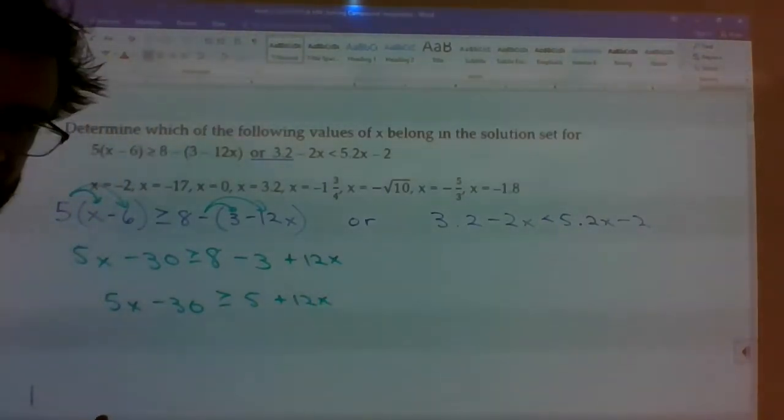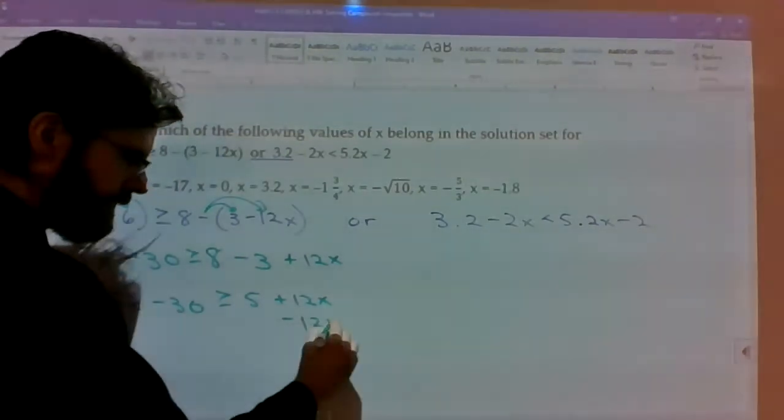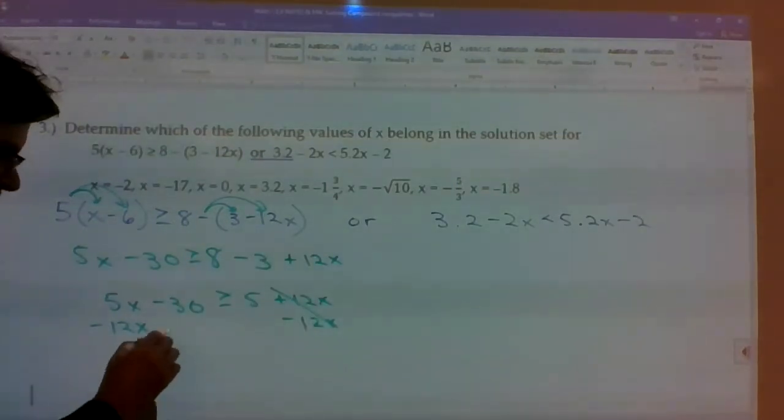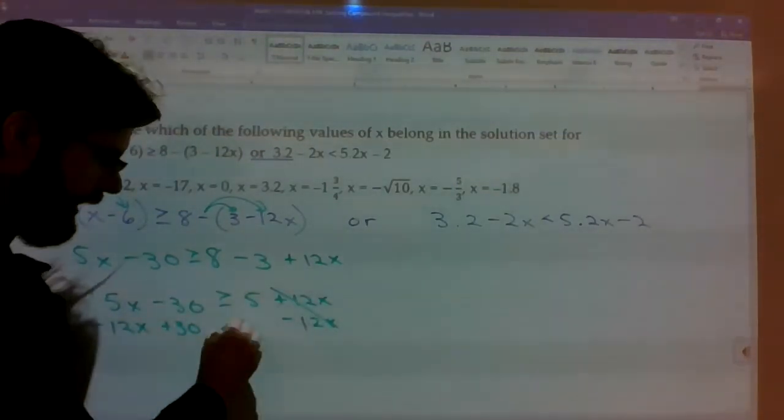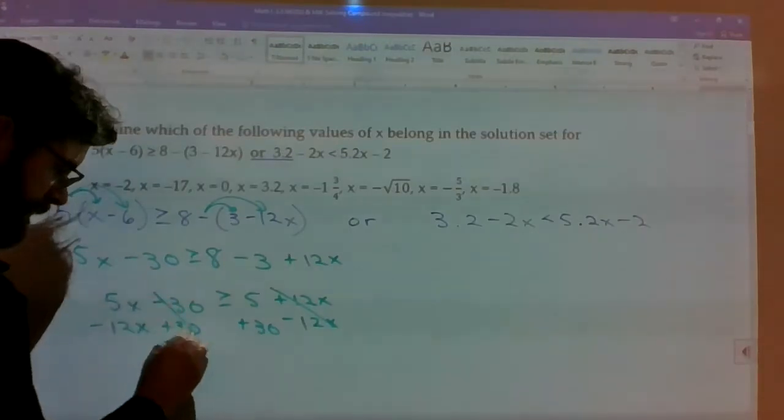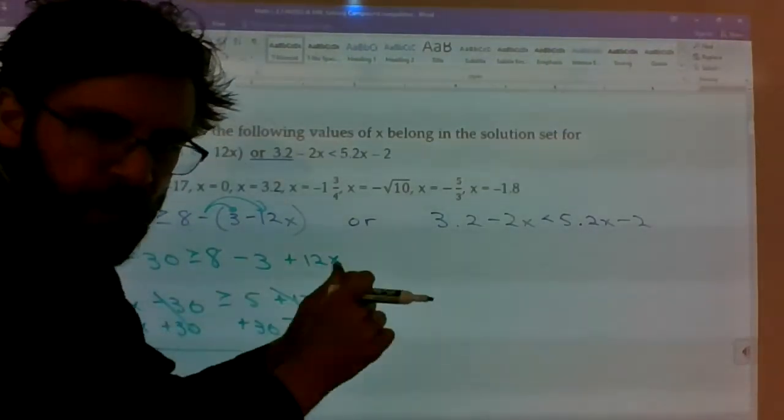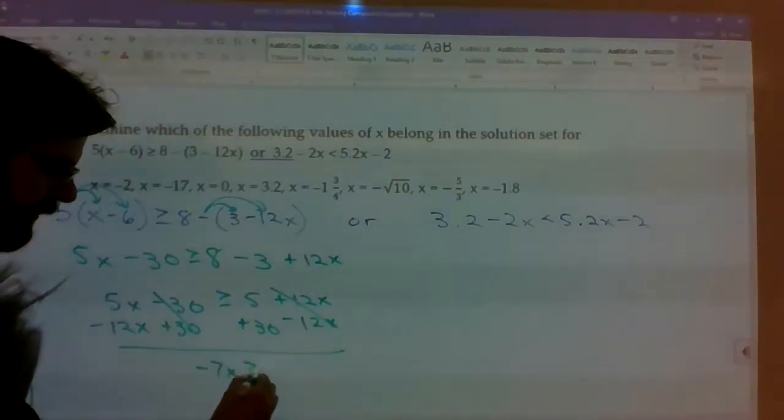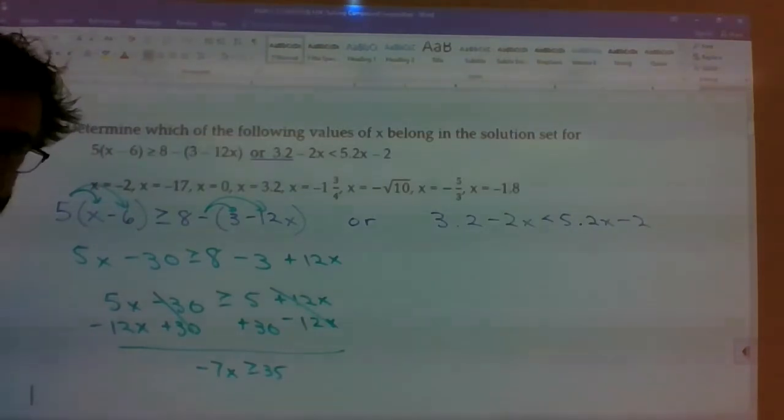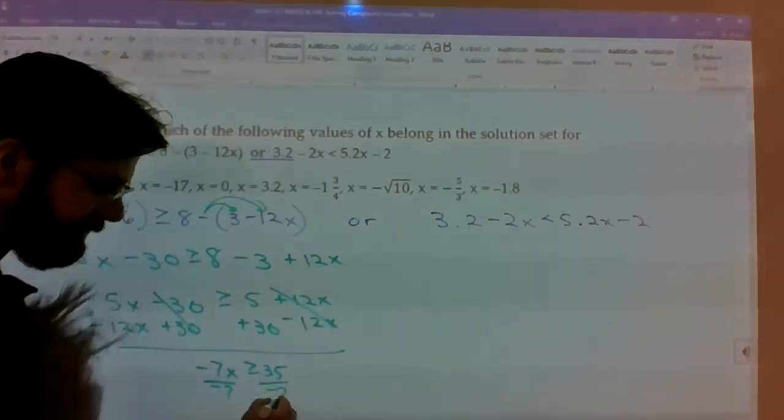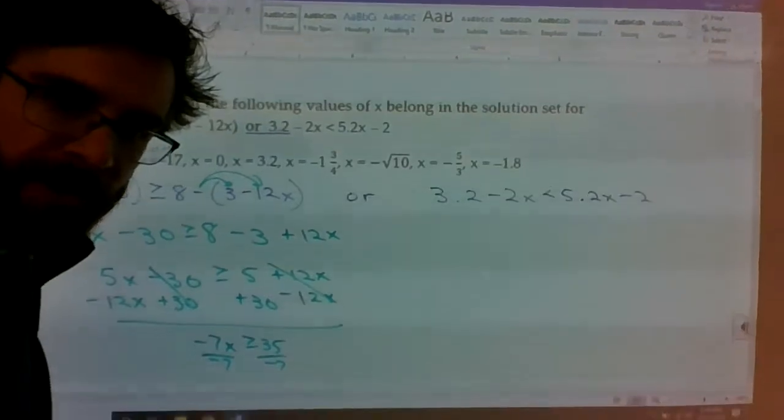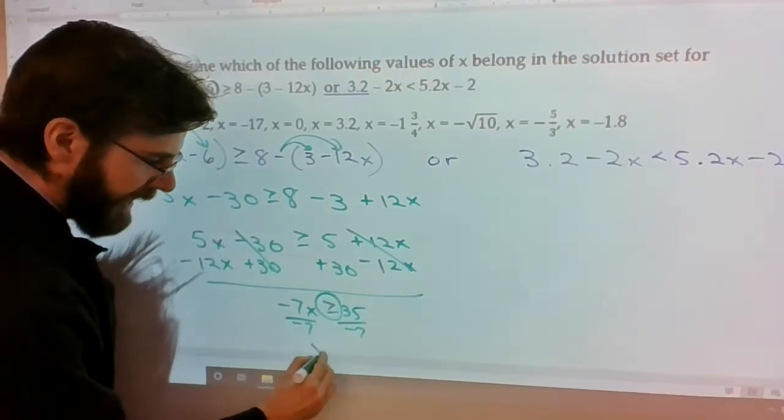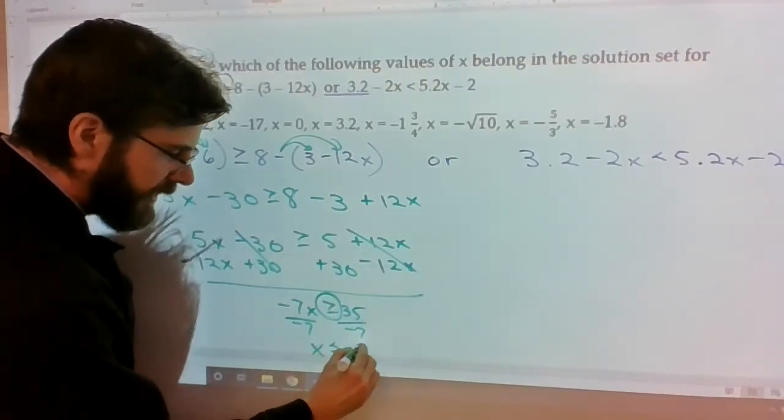So 8 minus 3 is 5 plus 12x. Now, normally, it's helpful to get the x's on the left. So I'm going to do that. That cancels the x's on the right and move the constants to the right. When you have x on the left, it'll point your graph in the right direction. So you got negative 7x is greater than or equal to 35. Divide both sides by negative 7. And if you'll recall, because I've been saying it over and over again, when you divide by negatives, you flip the symbols direction. So this is going to be x is less than or equal to negative 5.